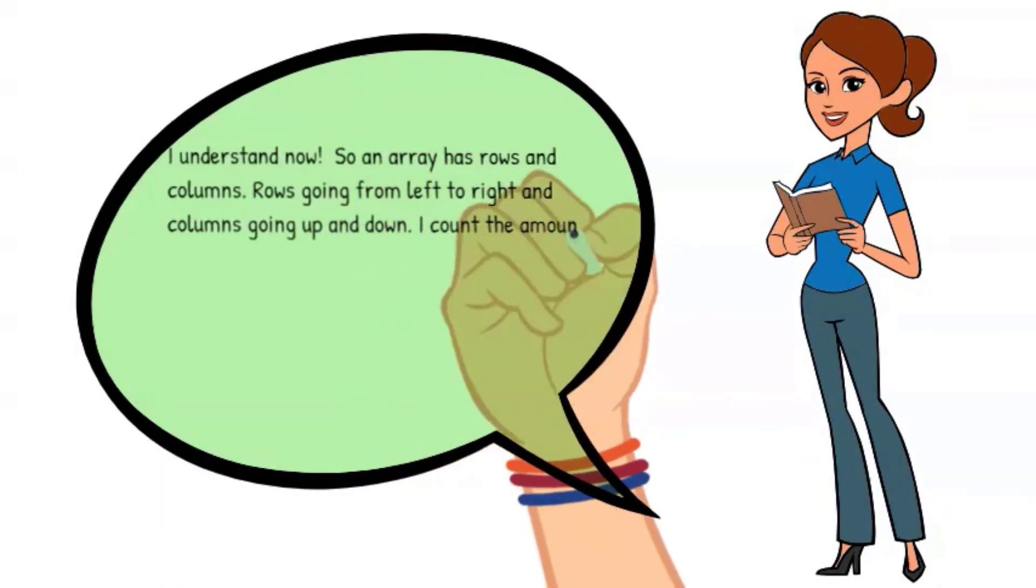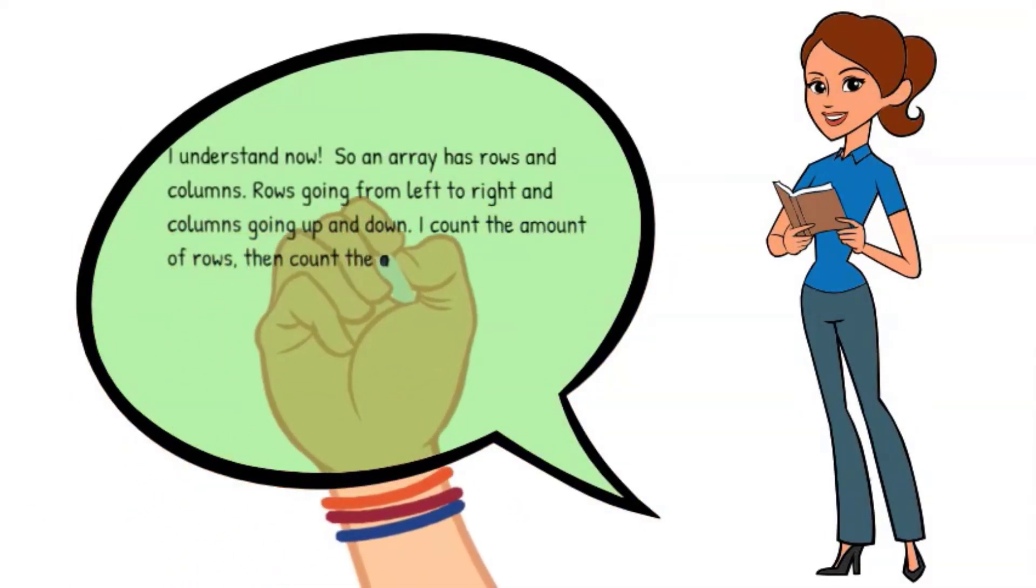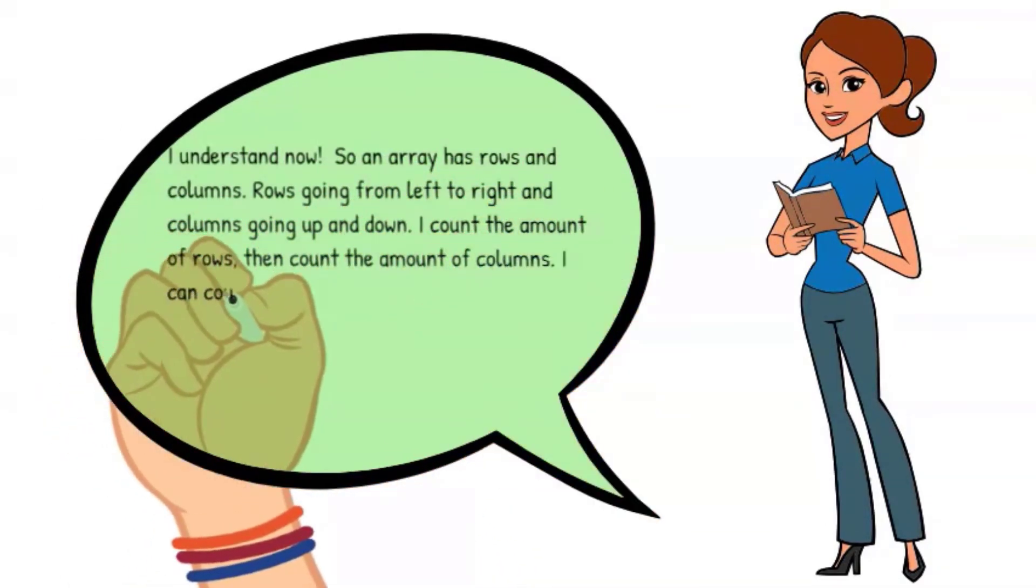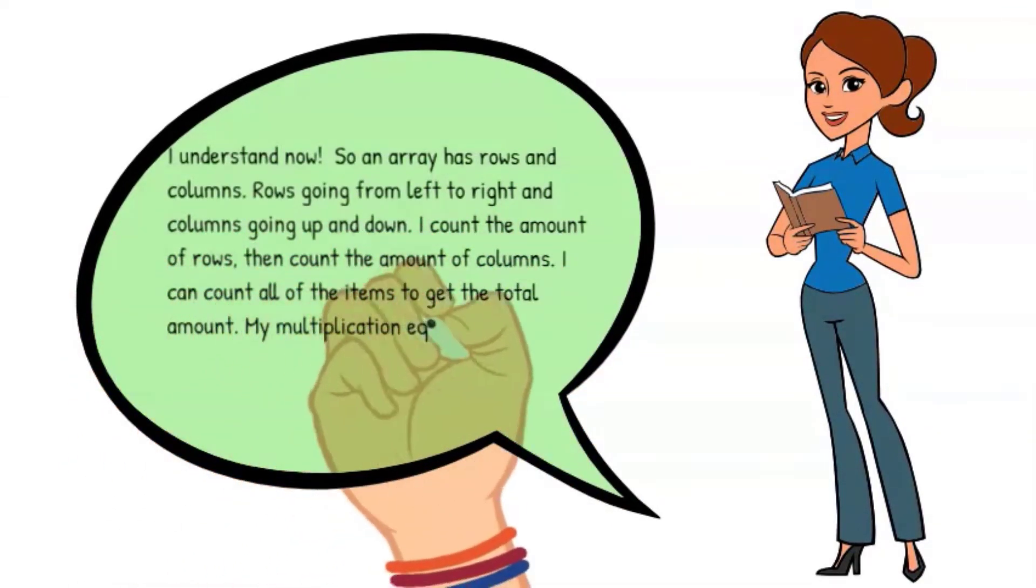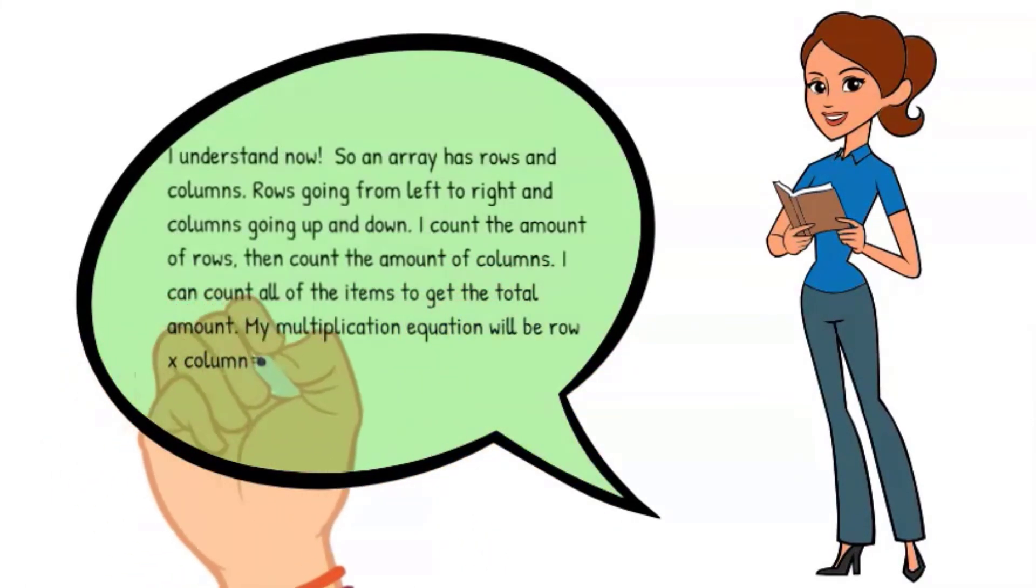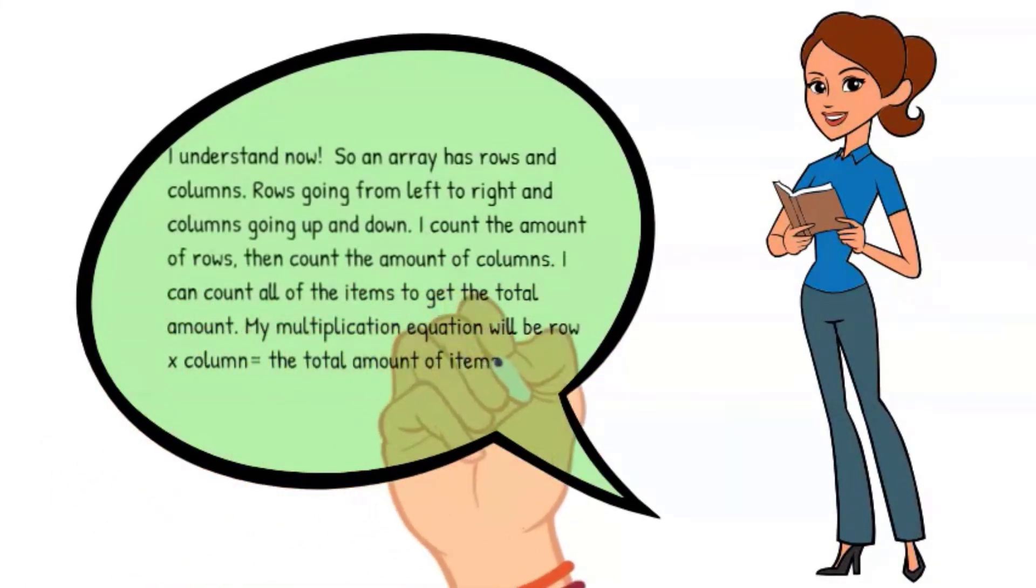I count the amount of rows, then count the amount of columns. I can count all of the items to get the total amount. My multiplication equation will be row times column equals the total amount of items. Got it!